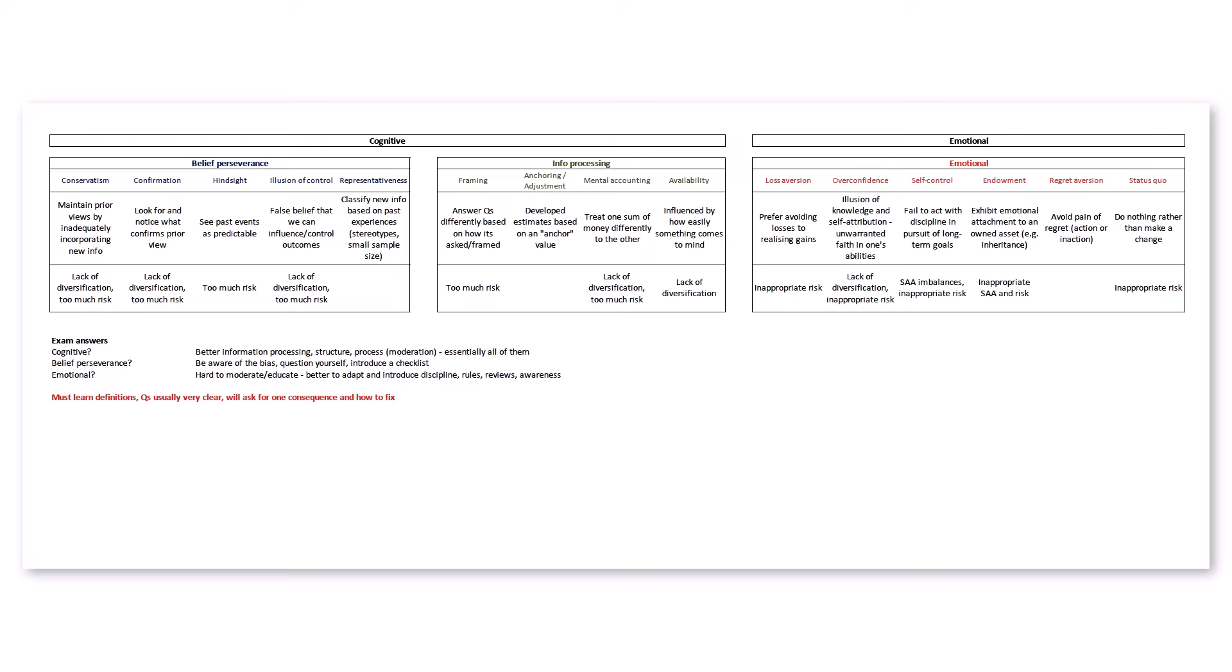Another one is behavioral finance. I found this one really frustrating because although conceptually it's quite simple, there's lots of overlaps and slight nuances between the different types of biases. It's quite hard to visualize them. I would highly recommend you do some sort of mind map and map it out in some way where you can visualize the entire ecosystem and see the overlaps.